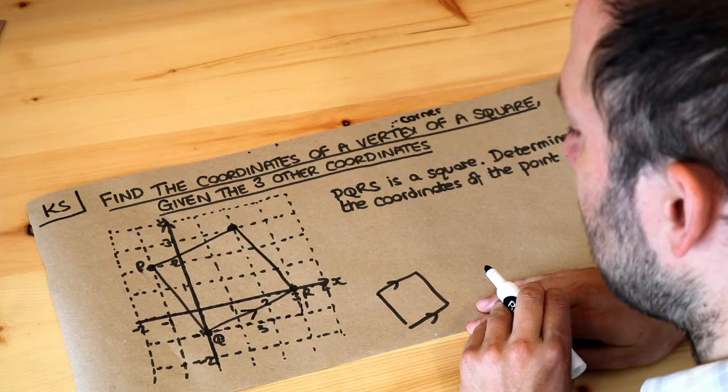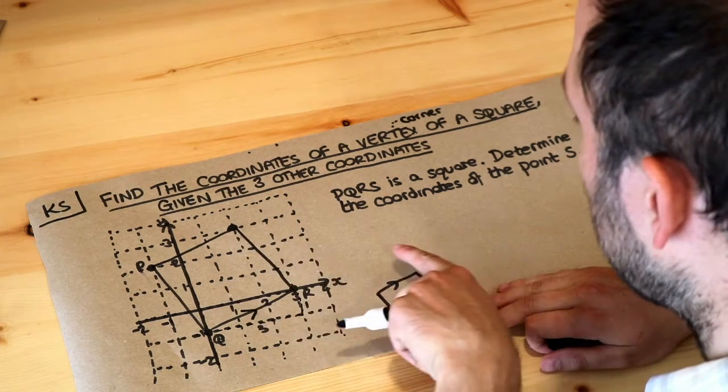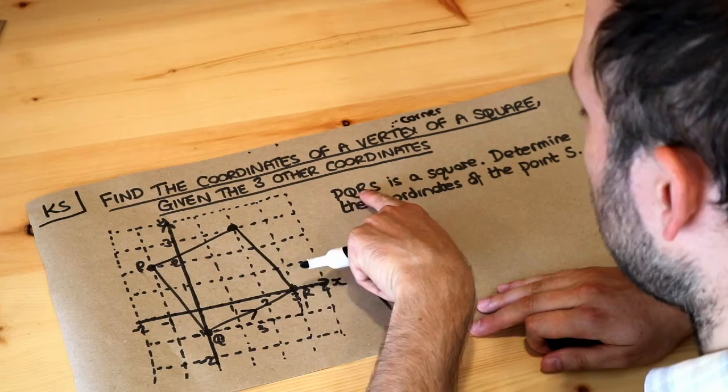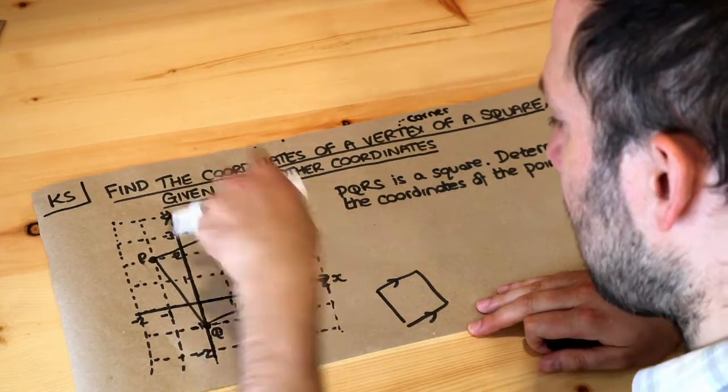So all we need to do now is to read off the coordinate of that point. And by the way, you should probably label this. This is a square PQRS, so PQRS, that must be S.